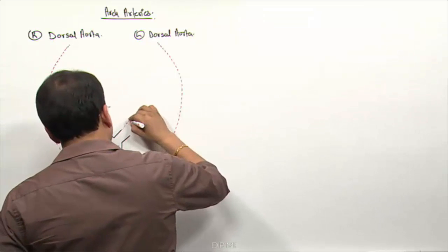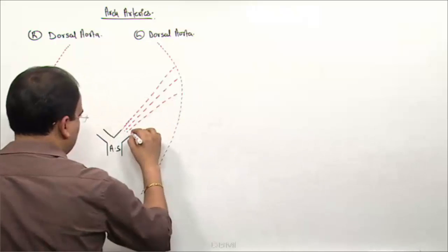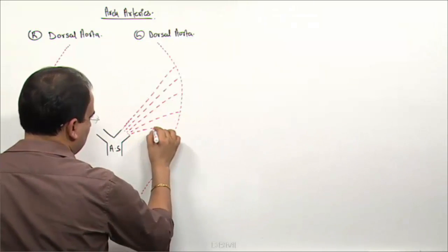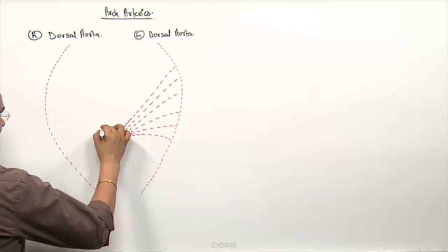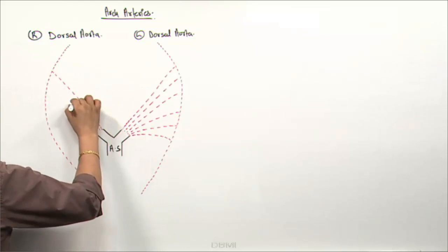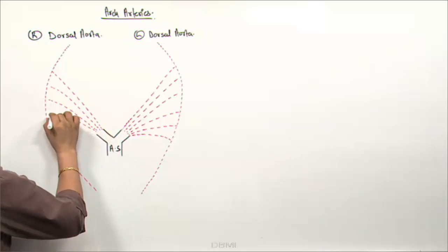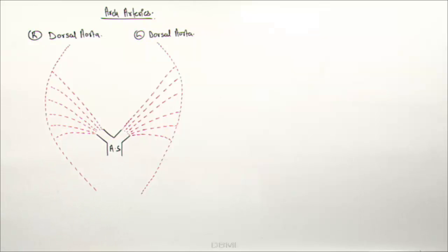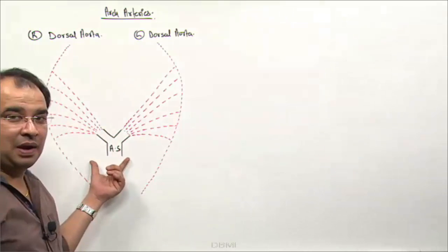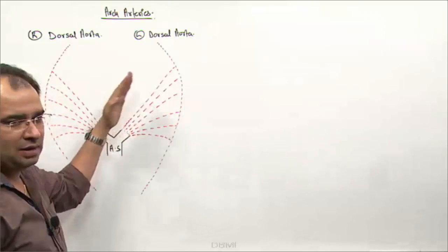We have the first, second, third, fourth, fifth, and sixth arch arteries — drawing them all dotted first. These are the arch arteries passing through the pharyngeal arches. So we have: dorsal aorta, the developing heart tube, the aortic sac with the right and left horn, and these six arch arteries.